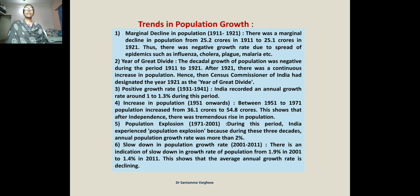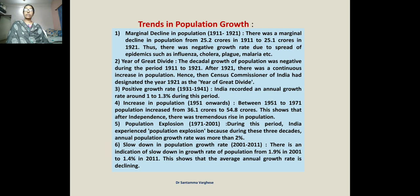This decline was due to the spread of epidemics such as influenza, cholera, plague, malaria, etc. Relating to today's context, the same conditions occurred during the corona virus pandemic. A hundred years ago, similar conditions arose worldwide and India was also affected. Many people died. Just as corona caused schools to shut, a similar epidemic occurred in 1921.